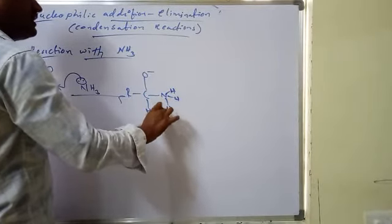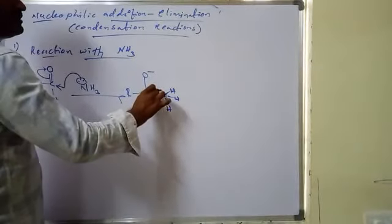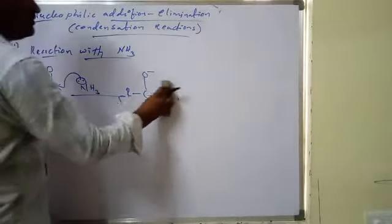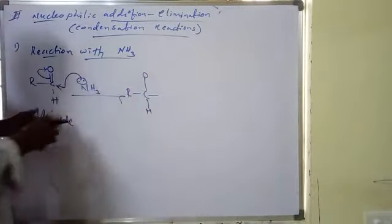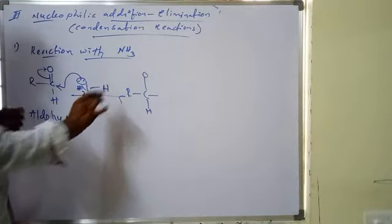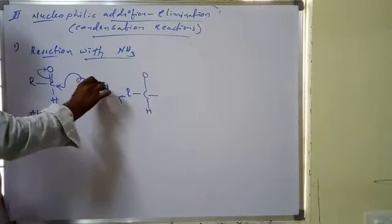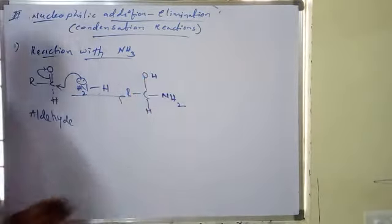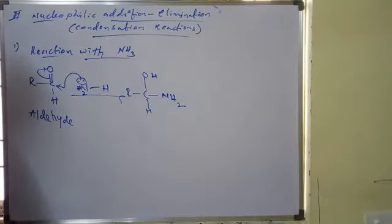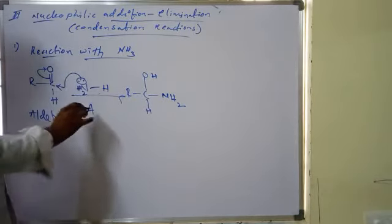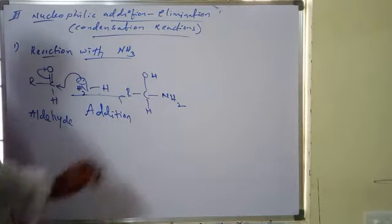So the nitrogen carries a positive charge at this stage. Through a simple mechanism, the NH2 group attacks here and H is also attacked. This intermediate is initially formed — this step is called Addition: NH2 attacked the carbon and H attacked the oxygen.